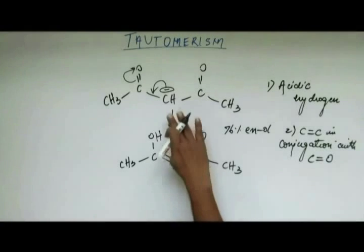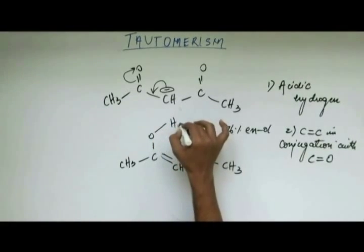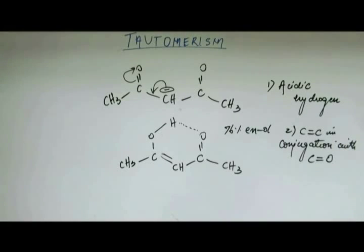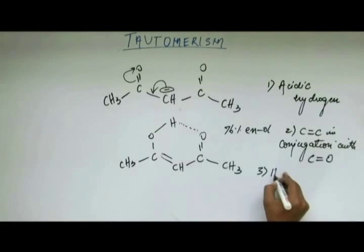The third reason — listen very carefully because this will come up again in the course. This structure actually exists like this: the enolic form exists with a hydrogen bond, shown by dotted lines. This is not a pure covalent bond, but the hydrogen bond is the strongest among all intermolecular forces — like Van der Waals and other forces of attraction. For that reason it exists as a six-member ring, which is highly stable because there is no angle strain. So the third reason why enol is more stable is hydrogen bond formation.